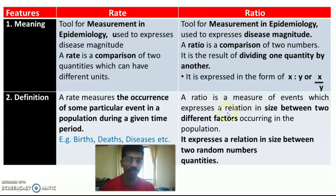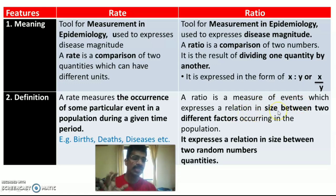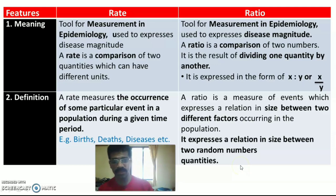Whereas a ratio is a measure of events which expresses a relation in size between two different factors or quantities occurring in the population. A ratio expresses a relation in size — a difference in size — between two different factors or occurrences among the population, essentially relating two random number quantities to each other.